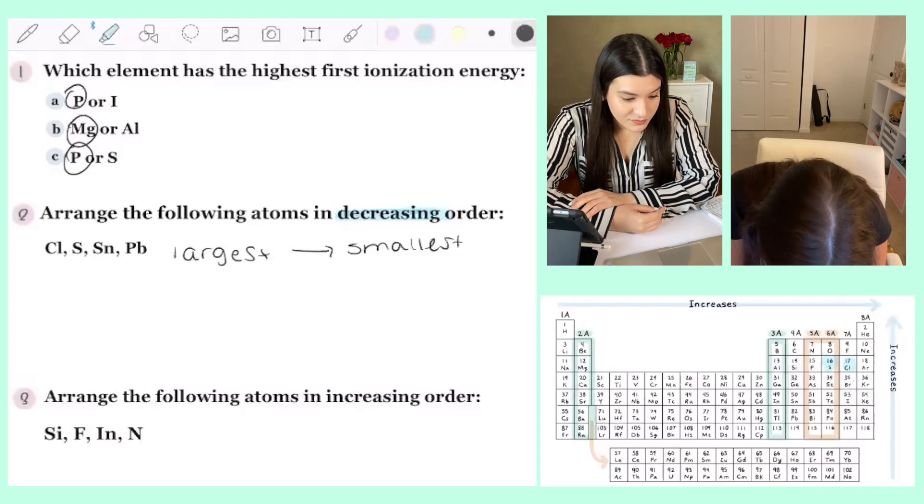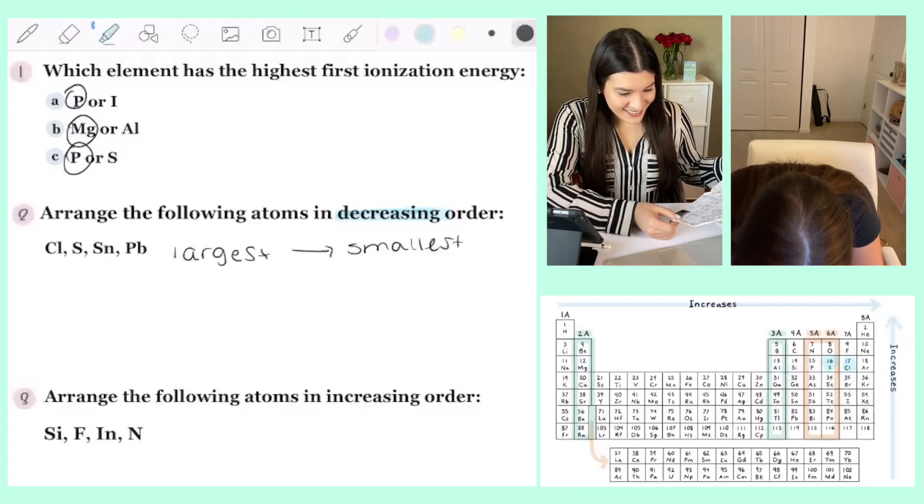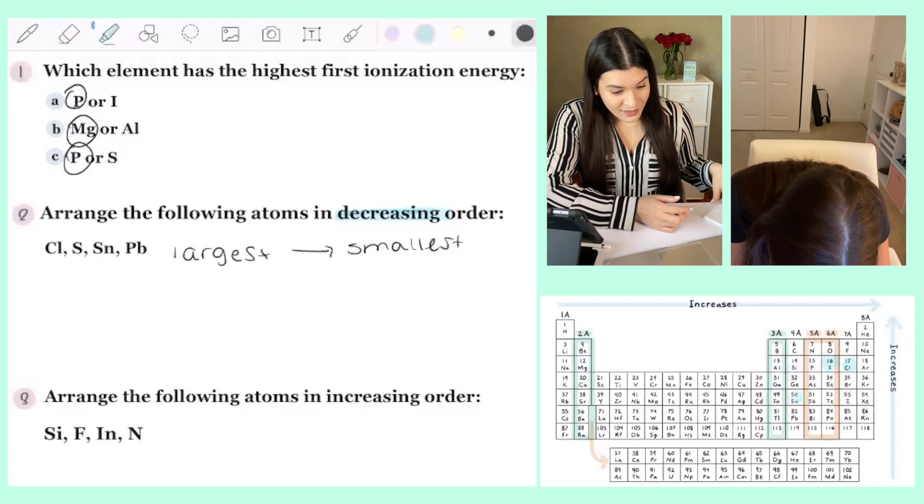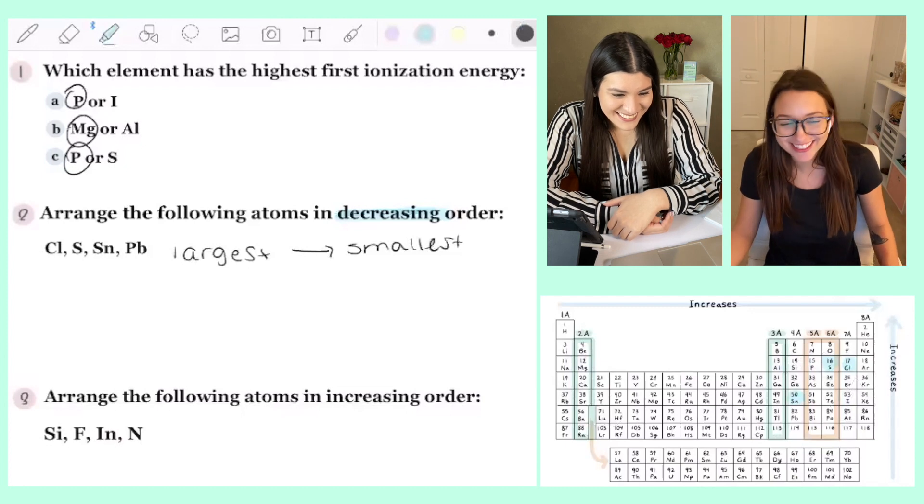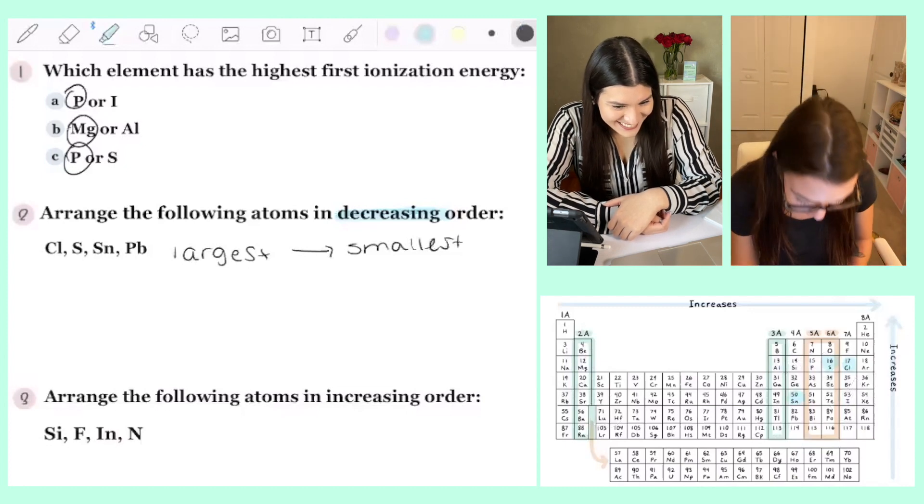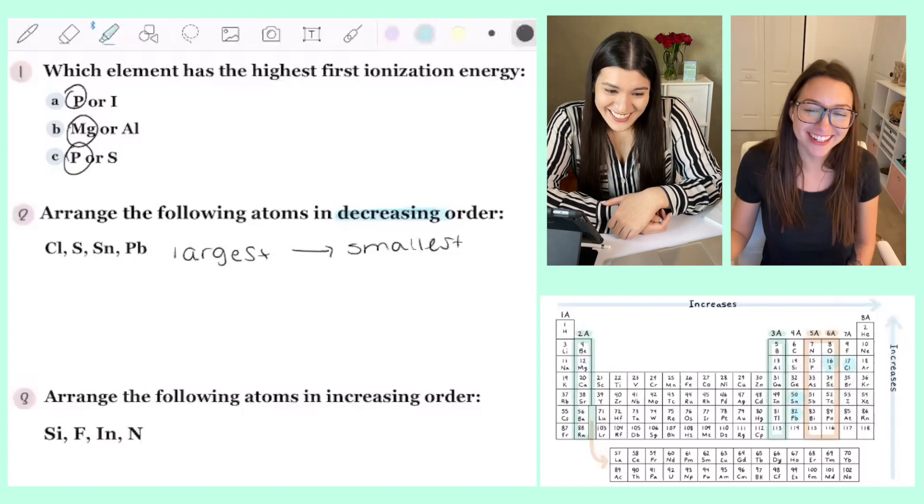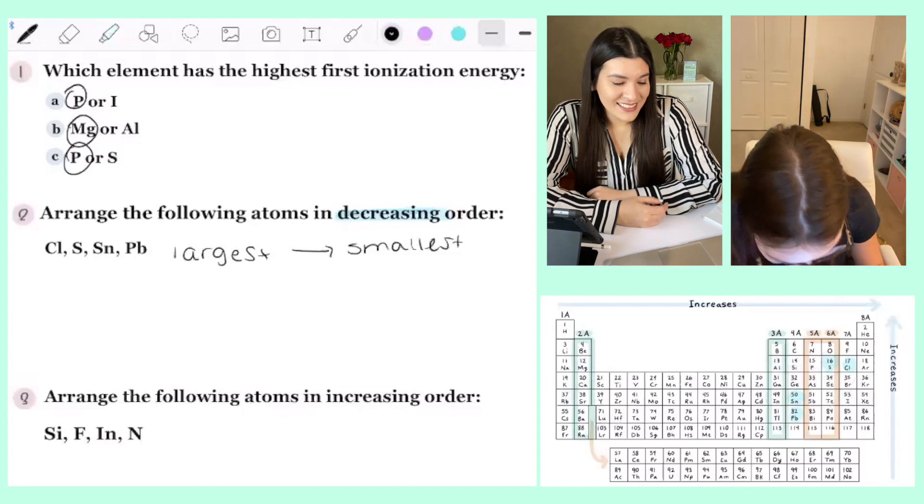Okay. Where is that? That is the same row as carbon. Or sorry, not row, column, the same column. Oh, I was like, I'm waiting for you to give me two letters one time. That's pretty mean. Yeah.